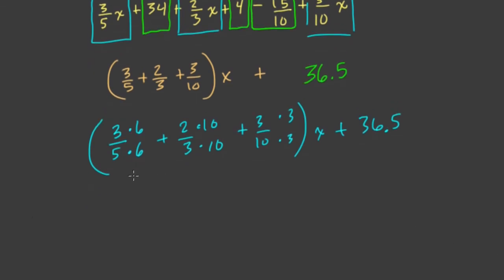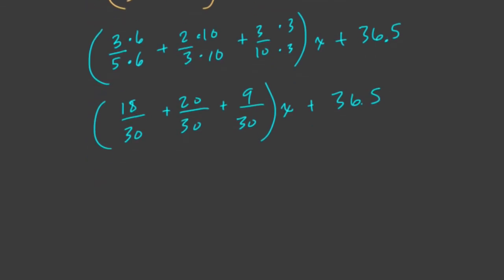All right, so now once we have this step, we can add the fractions. We have 18 over 30, plus 20 over 30, plus 9 over 30, and that's all in terms of x. Then we have the constant here still, 36.5. So now we just add these fractions, 18, 20, and 9. Well, what's that? 18 plus 20 is 38, plus 9 more is 47. So we have 47 over 30, there's no common factors there, x plus 36.5.